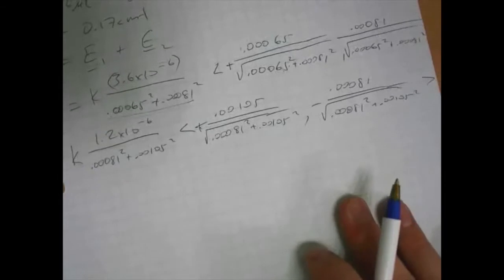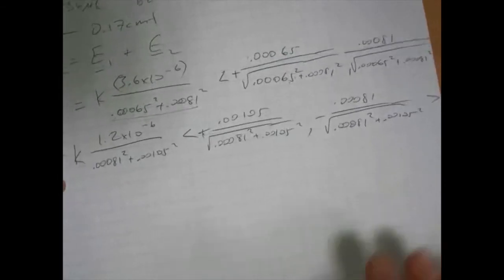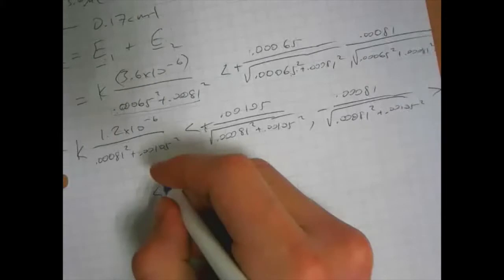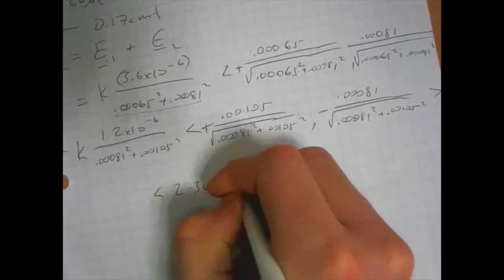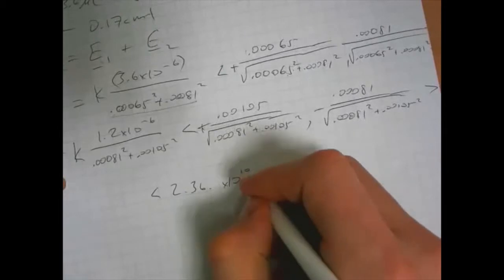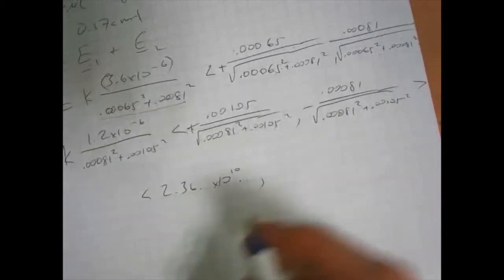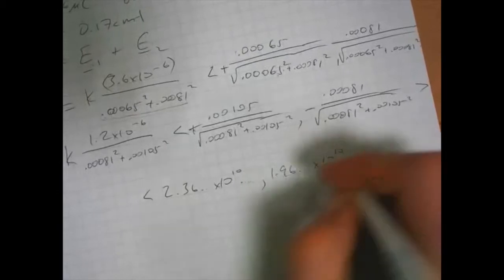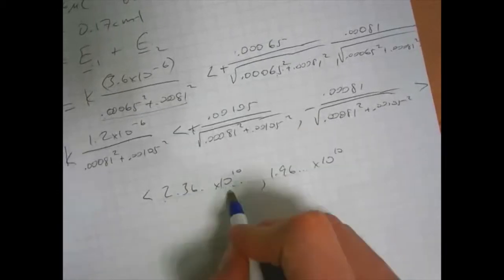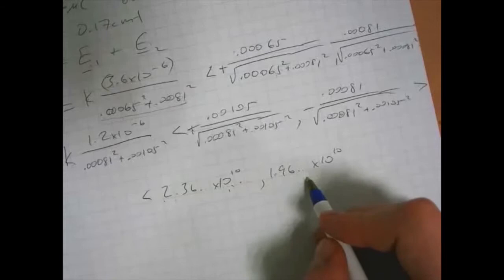Anyway, when I punch all this in, I wind up getting 2.36 times 10 to the 10th for an x component, and 1.96 times 10 to the 10th for a y component.